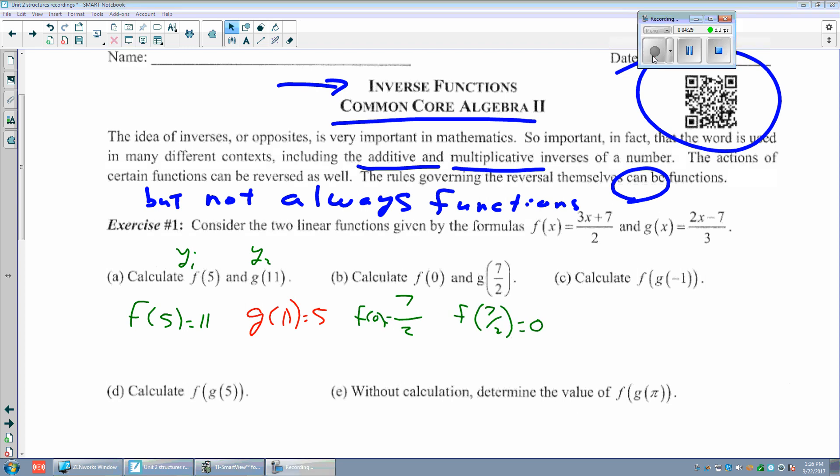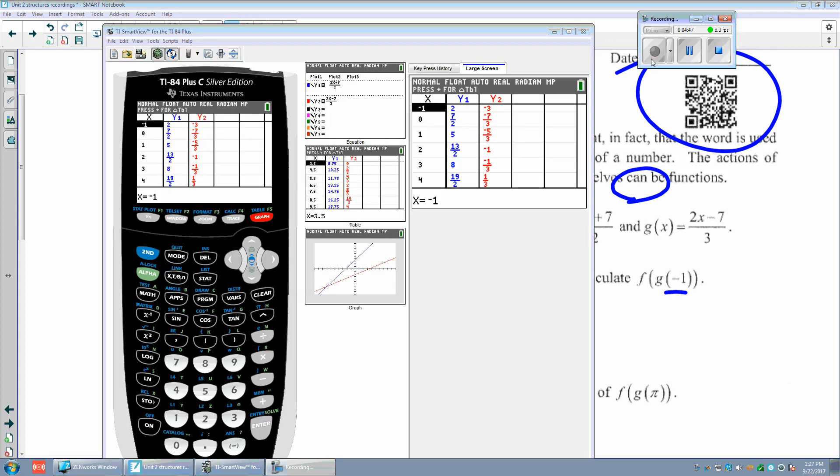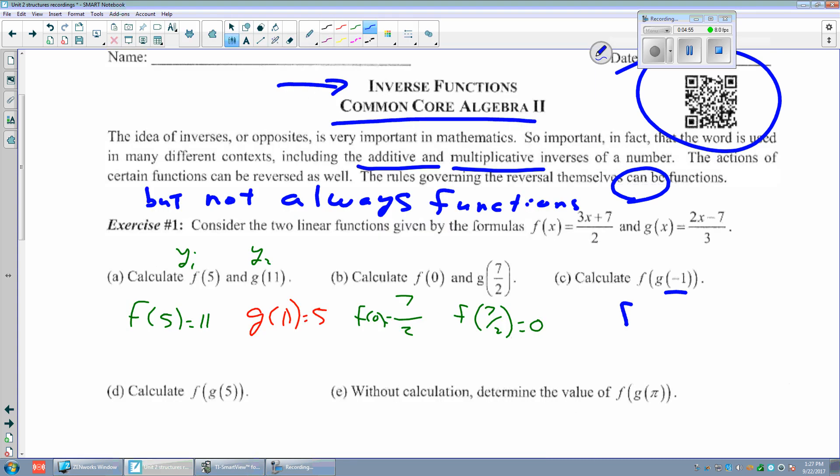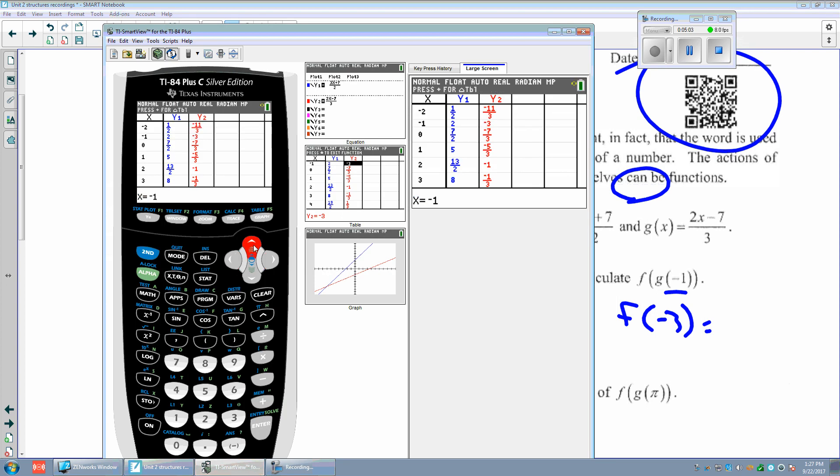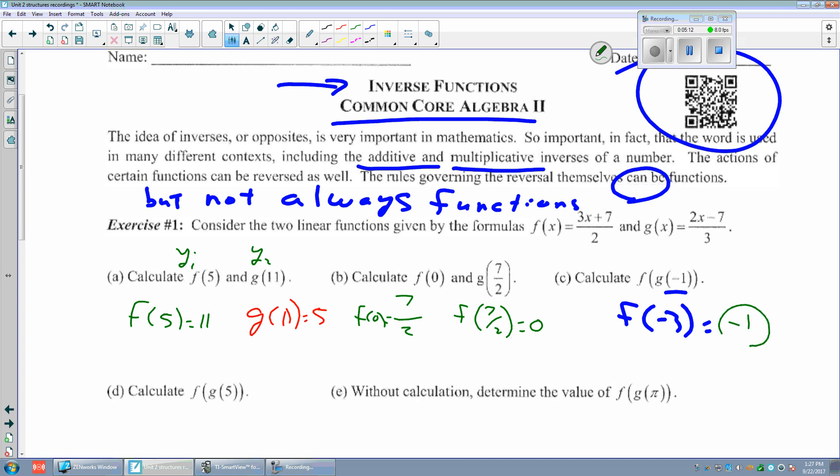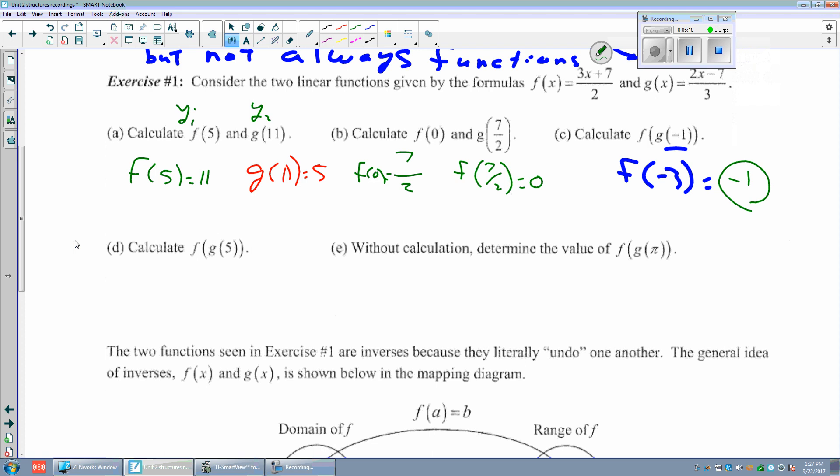Do you see a pattern here? Can you figure out what f(g(-1)) is? Let's evaluate g(-1) first - g is the second column, that's -3. Then f(-3), looking at the first column y1, that's -1. Wow, pretty cool! Can we figure out what this one is without calculating? It's 5. Without calculating, can we determine this one? It's pi. Are you catching on? The functions f and g are inverses of each other.